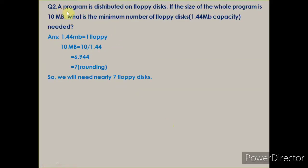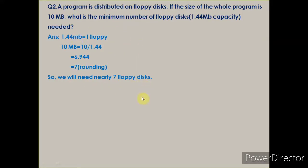Another problem: a program is distributed on floppy disks. If the size of the whole program is 10 MB and one floppy's capacity is 1.44 MB, what is the minimum number of floppies required? 10 ÷ 1.44 = 6.94, which rounds up to approximately 7. So we will need nearly 7 floppies. This type of question requires converting different units of computer memory.